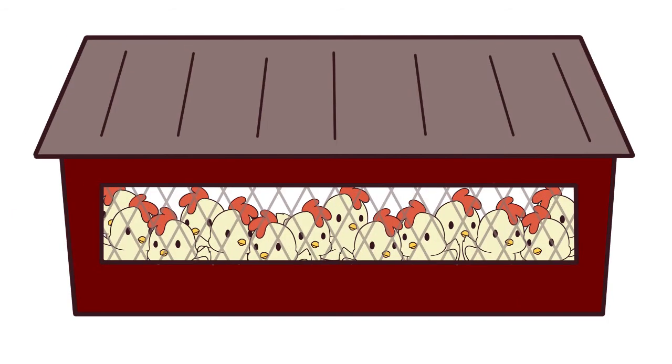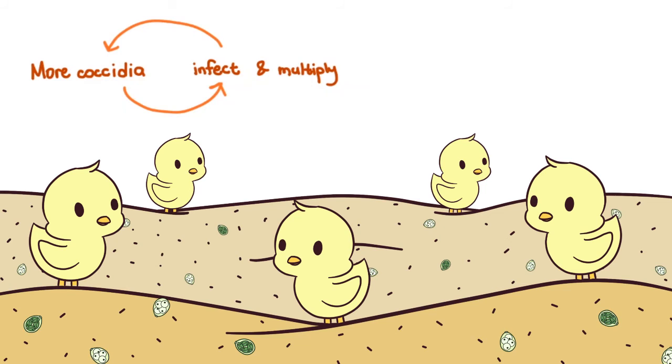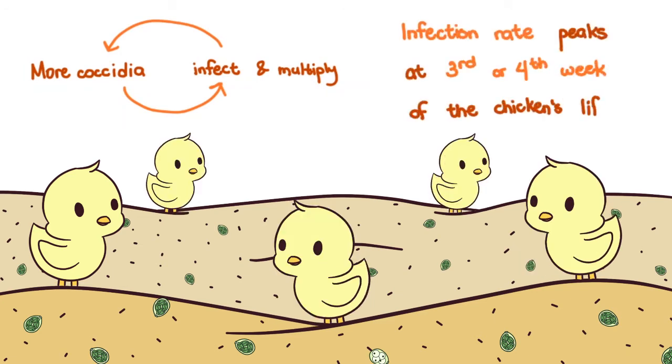This occurs in pretty much every poultry farm, but not all chickens develop clinical disease. In a new batch of chicks with fresh litter, there are few oocysts. A few chicks are infected, the coccidia multiply, and lots more coccidia are pooped out about a week later. The cycle repeats, and the infection rate peaks at around the third or fourth week of the chicken's life.